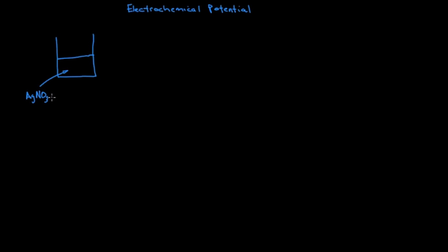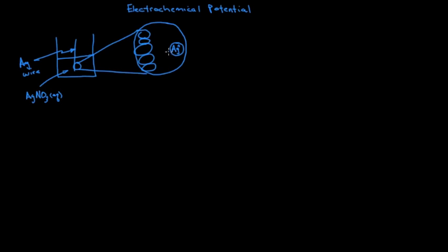So consider a solution of silver nitrate and a silver wire dipping into the nitrate solution. Let's zoom in here to the atomic level. It's possible for some silver ions in solution to find a place on the metal surface and become a part of the metal by taking an electron out of the conduction band of the metal. Consequently, the metal surface becomes positively charged.